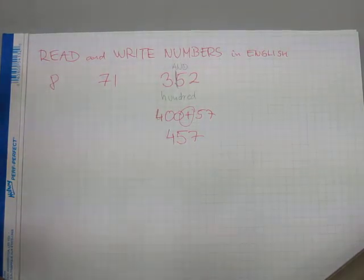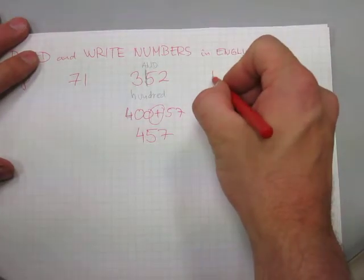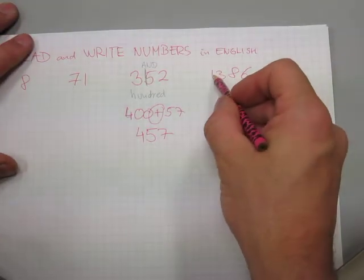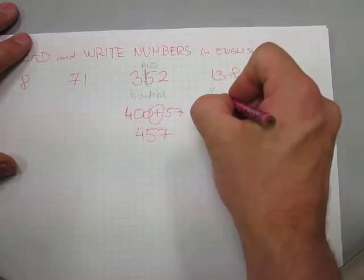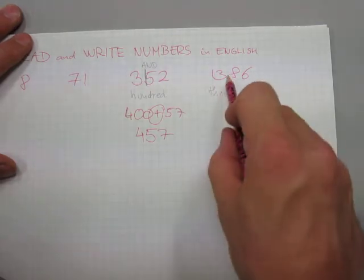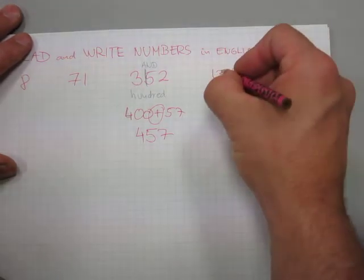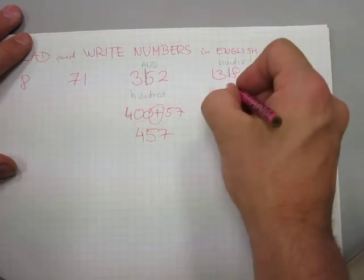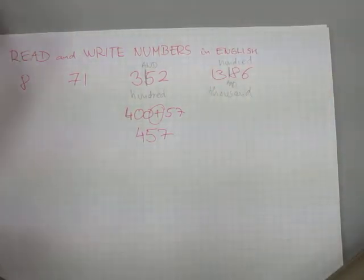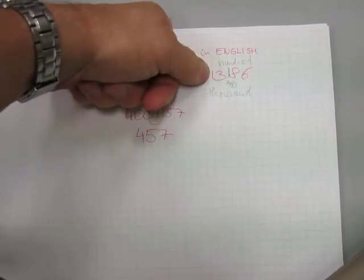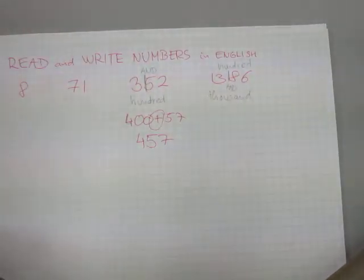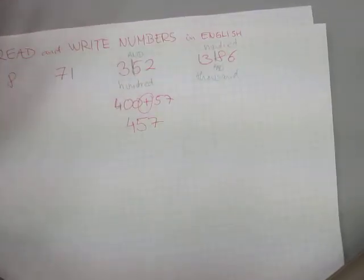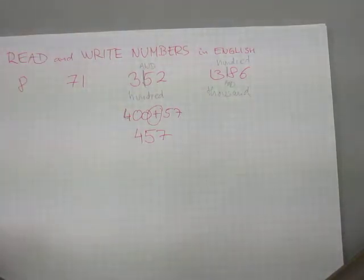The same principle applies to thousands. For a number like 1386, it gets read with a couple of extra words. You read 1 — the first digit — then say the word 'thousand,' then read the next digit 3 and say 'hundred,' and say the word AND just before the tens. So this four-digit number gets read as '1386' — with extra words that don't get written down on the paper.